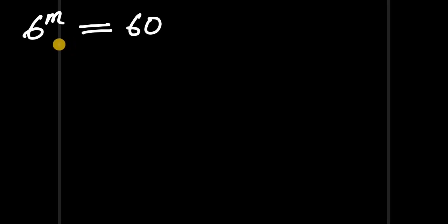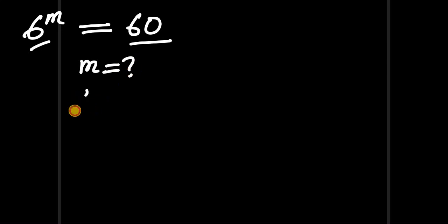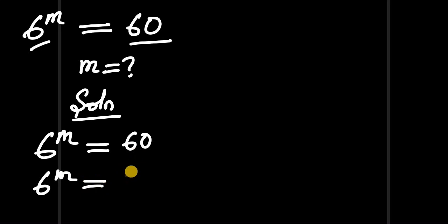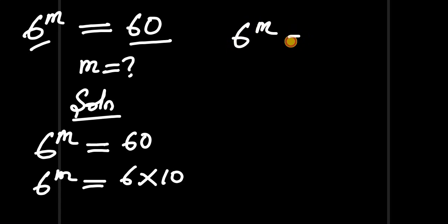In this video we have an interesting exponential equation: 6 to the power of m equals 60, and we have to find the value of m. We can write 6 to the power of m equals 60, which is simply 6 times 10. So we have 6 to the power of m equals 6 times 10.